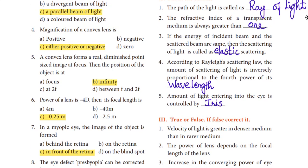Next, magnification of a convex lens is positive or negative? Convex lens can produce both virtual and real images, so the magnification is either positive or negative. Option C is the right answer.